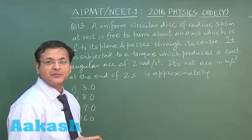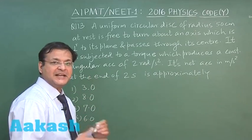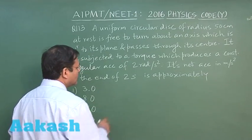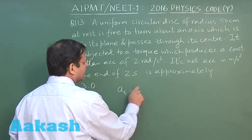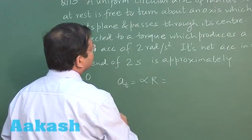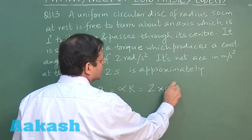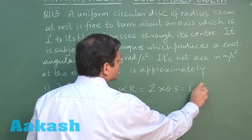Its net acceleration, net acceleration means tangential as well as centripetal acceleration and Pythagoras of that. So let us suppose I talk about the tangential acceleration, it will be alpha into r. Now what is alpha? Alpha has been given 2 and r has been given 0.5. So this comes out to be 1 meter per second square.